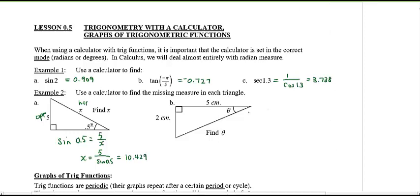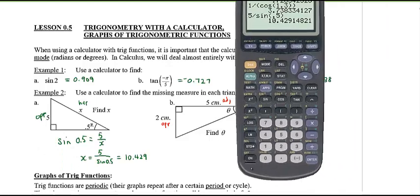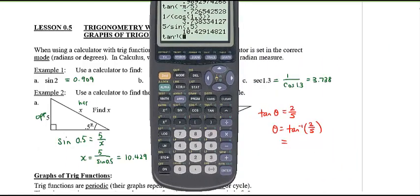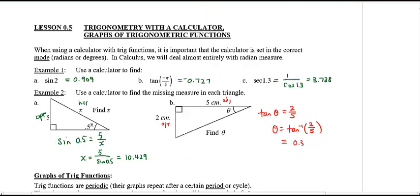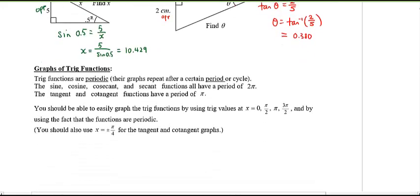Going the other way — we don't know the angle but we know the adjacent and opposite sides, so we use tangent: tan(θ) equals 2 over 5. To find theta, take the inverse tangent of 2/5. In radian mode, the answer is 0.380 radians.